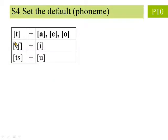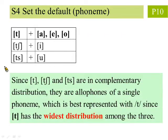In Step 4, we decide which of the three consonant sounds is the default. As we can see from this table, the three sounds are in complementary distribution. Furthermore, because the sound [t] has the widest distribution among the three, we treat it as the default.